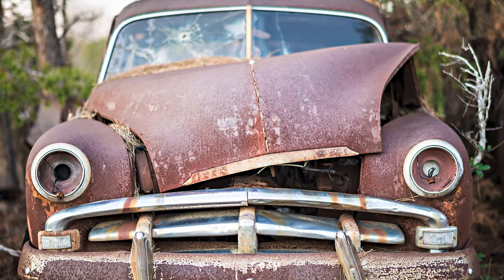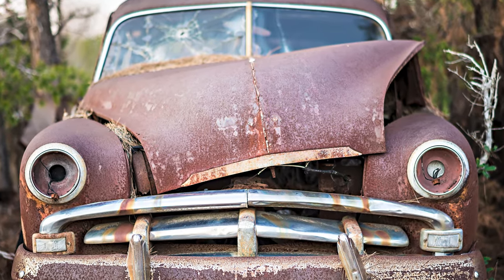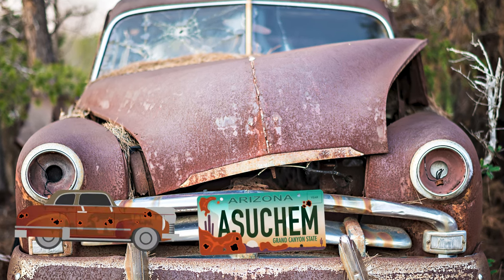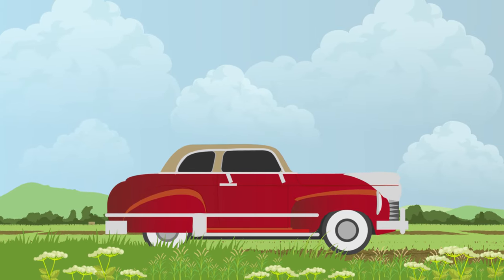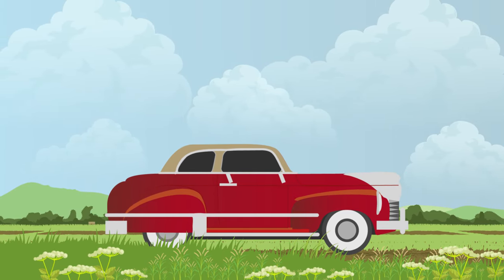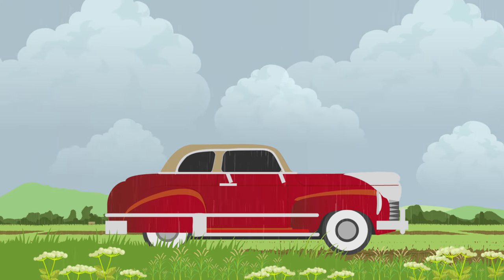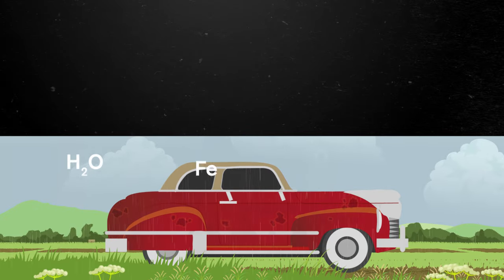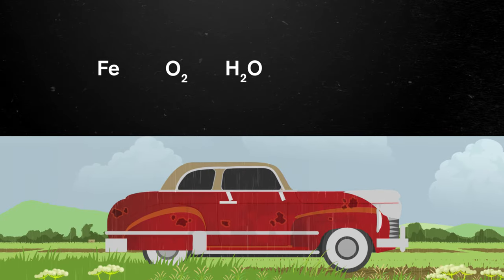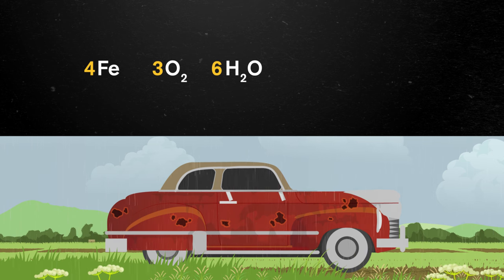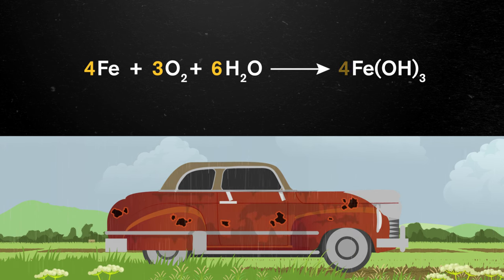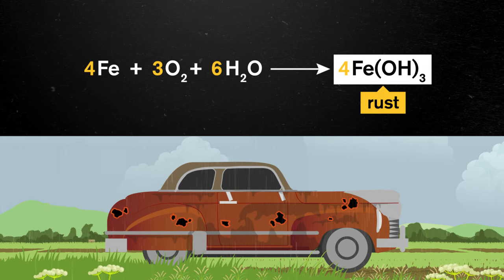Let's visualize this with an example. Rust forms from a chemical process where iron oxidizes in the presence of water. You might see it on historic vehicles, license plates, or old mysterious keys. The process begins when iron from the car, oxygen in the air, and water from humidity all come into contact. When the humidity reaches a high enough level, it tips the scales and initiates a chemical change. The atoms in iron, water, and oxygen rearrange; the chemical composition changes from three separate substances into a combination of them; and that combination is a new substance — iron-3-hydroxide, or rust.